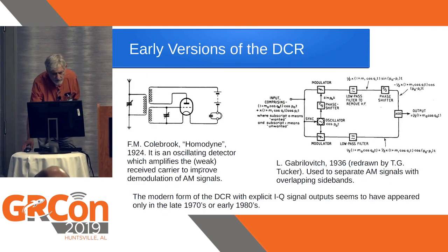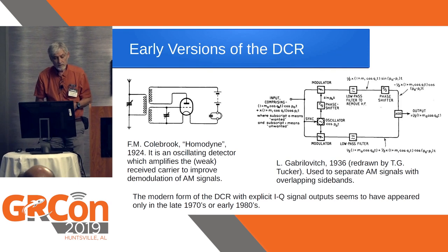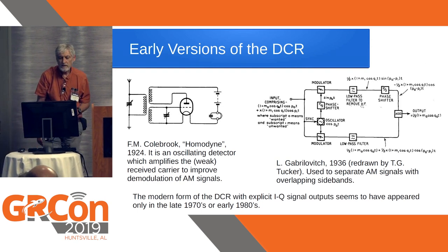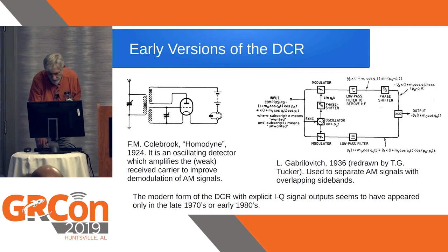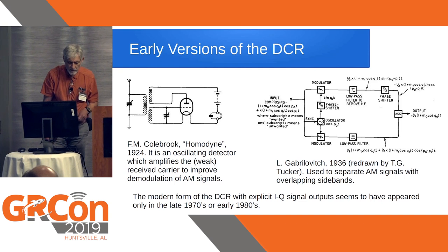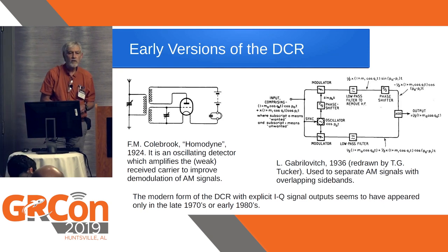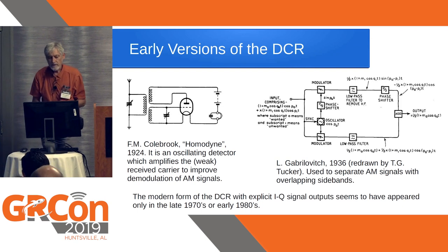The origins of this go back to 1924, where the idea — similar to Armstrong's — was to increase the voltage from a received signal for more efficient rectification with diodes. A 1936 patent shows basically the IQ version we use today, but it was used to suppress overlapping sidebands in radio signals that were too close together. The modern form of the DCR with explicit IQ signals at the output seems to have appeared only in the late 1970s or early 1980s, partly because highly selective low-pass filters were expensive in the analog domain and became much easier with digital signal processing.